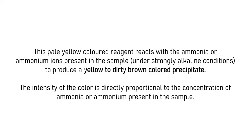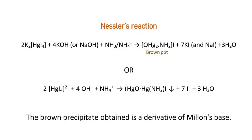This pale yellow colored reagent reacts with the ammonia or ammonium ions present in the sample under strongly alkaline conditions to produce a yellow to dirty brown colored precipitate, the intensity of the color being directly proportional to the concentration of ammonia or ammonium present in the sample. The brown precipitate obtained is a derivative of Millon's base.